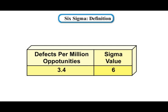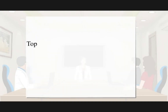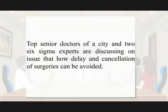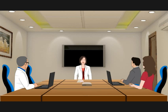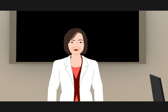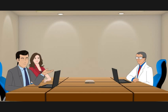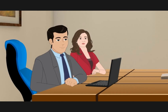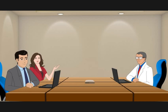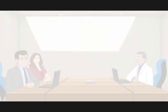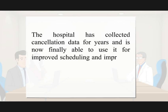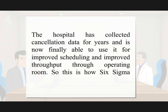Let's understand Six Sigma with an example. Top senior doctors of a city and two Six Sigma experts are discussing how delay and cancellation of surgeries can be avoided. The agenda is how to improve patient throughput in the operating theatre, as the number of delayed and cancelled surgeries is increasing. Using Six Sigma, they can define the causes for delays and cancellations so that throughput through the operating room can be improved. The hospital has collected cancellation data for years and is now able to use it for improved scheduling and throughput.